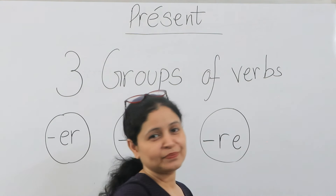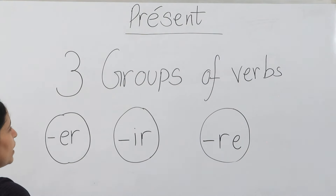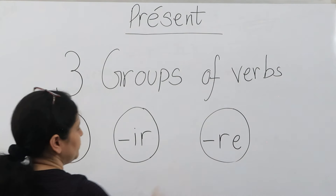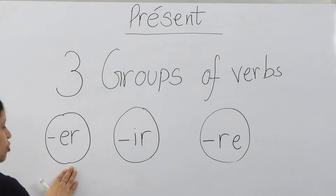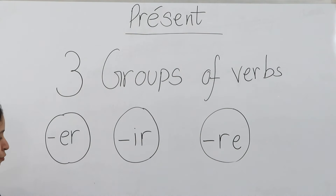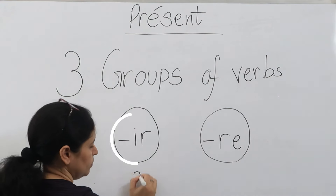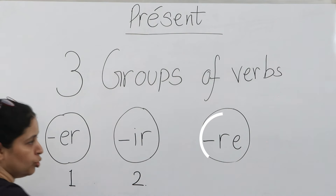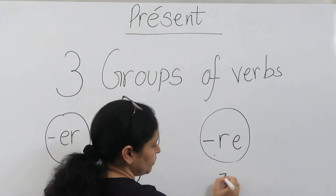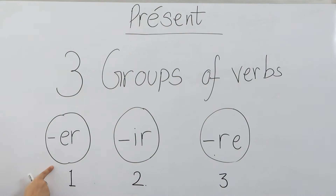Welcome to your French class. Today we have three groups of verbs. The first group has all the verbs which end with -er in infinitive form. The second group verbs end with -ir. The third group ends with -re. Today we'll first take the first group, the -er ending verbs.